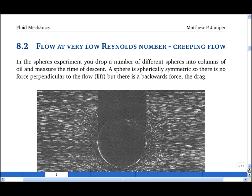In one of the experiments at Cambridge, the students drop spheres with different densities and diameters into tanks of oil with different viscosities. They then measure the terminal velocity of the spheres, and this allows the drag coefficient of the spheres to be calculated.